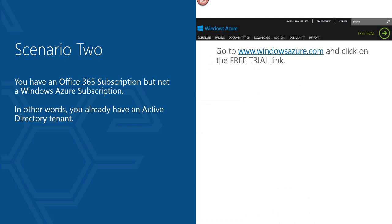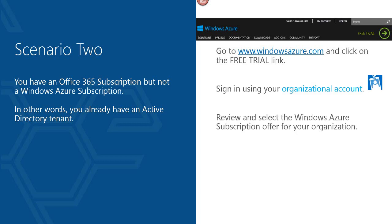Scenario two is also very easy. You already have an Azure Active Directory through an online service like Office 365, but you don't have a Windows Azure subscription. Simply go to WindowsAzure.com, click the free trial link in the upper right corner, and when prompted to sign in, make sure you sign in using your organizational account — look for the badge icon. Then review the offers, select your new Azure subscription, and that's it. You now have a Windows Azure subscription with an organizational account from Windows Azure AD.